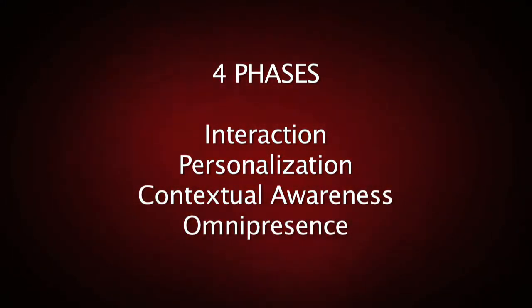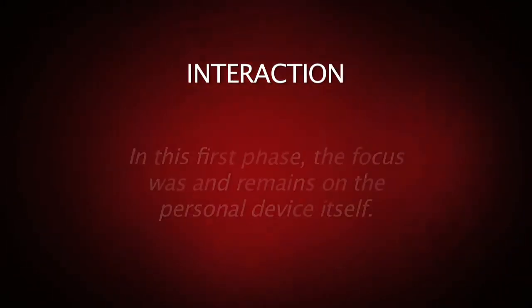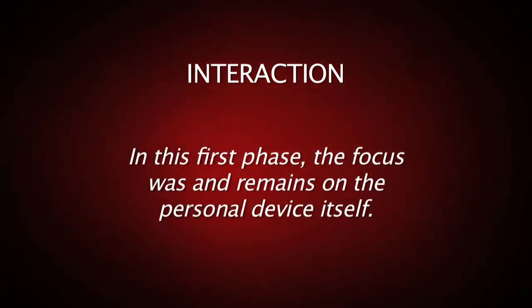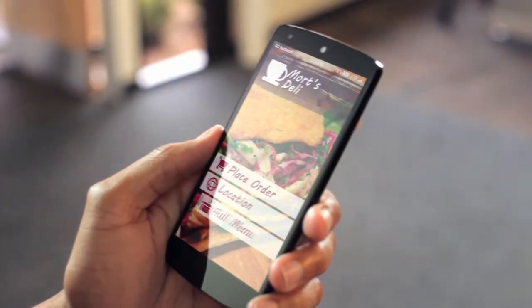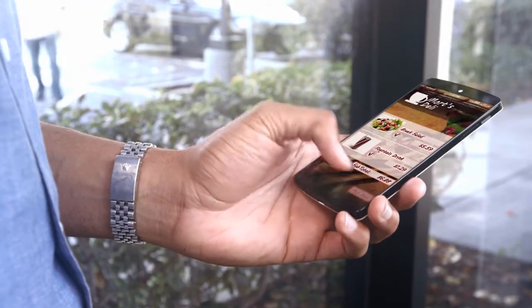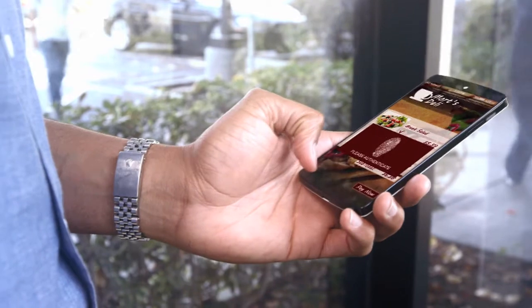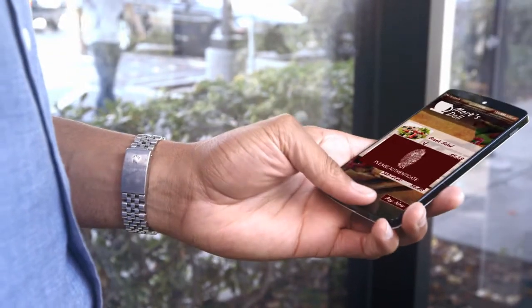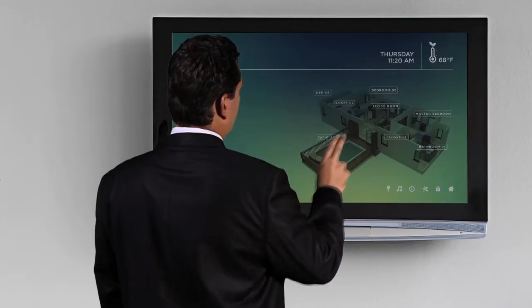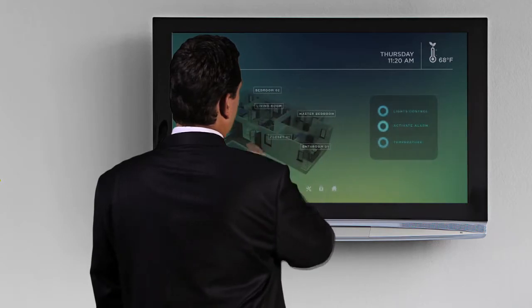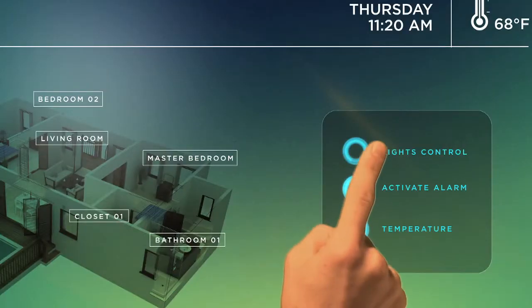Let's talk about these four phases, starting with interaction. In this first phase, the focus was and remains on the personal device itself. This revolution began eight years ago with the introduction of smartphones, where we moved from buttons to touchscreens. Synaptics was at the forefront of this transition, providing the technology that enabled the industry's first touchscreen phone, the LG Prada.